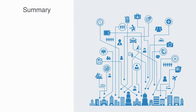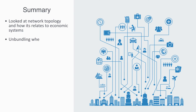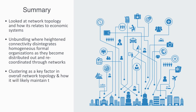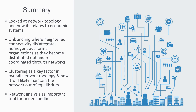In this video, we've been taking a look at network topology and how it relates to economic systems. We firstly talked about the process of unbundling, where heightened connectivity disintegrates homogeneous formal organizations as they become distributed out and re-coordinated through networks. We talked about clustering as a key factor in overall network topology, and how it gives rise to network heterogeneity — distinct subsystems within the network that will likely maintain it out of equilibrium. We finally mentioned how network analysis is an important tool for understanding and modeling informal economies.